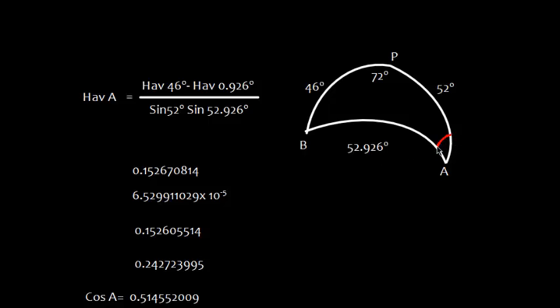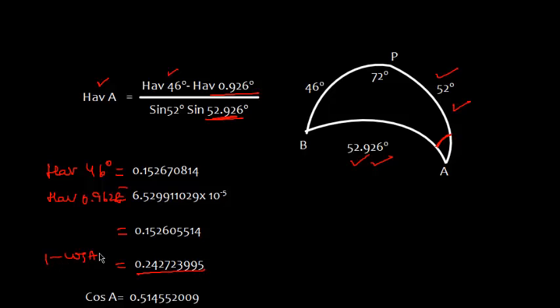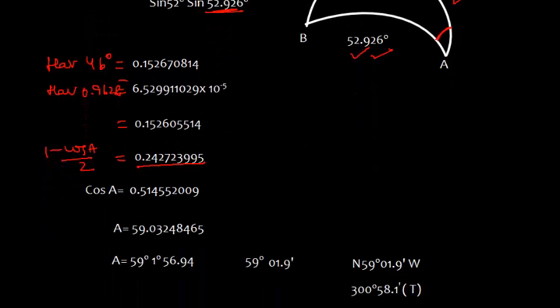Now let's find out this angle A. So we can use again this haversine formula. Hav angle A is equal to hav 46 minus difference, which is 52.926, divided by sin 52 and sin 52.926. Let's evaluate. First of all, I need to find what is hav 46, then I need to evaluate hav 0.926, and then subtract. So whatever the product comes, I divide this, so I get this value.